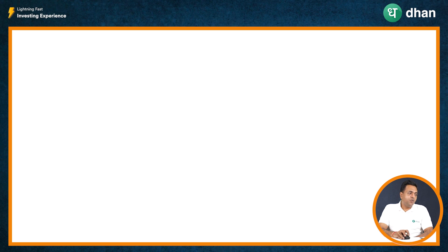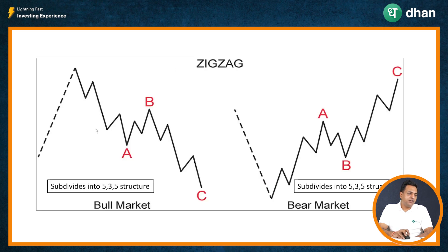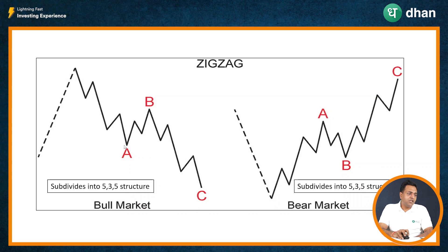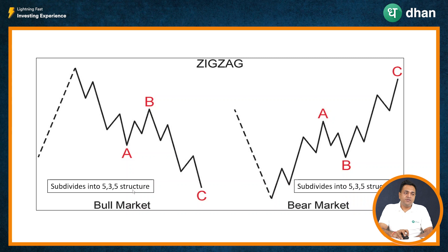To begin with, when the corrective wave is in a zigzag fashion, you will see that the corrective wave will be in a zigzag type of formation. This means the first corrective wave — wave number A — will have a 5-wave structure. Then wave number B will have a 3-wave structure, and wave number C will have a 5-wave structure. That is why we say the corrective wave, whenever it is a zigzag, will divide into a 5-3-5 structure in terms of sub-waves.